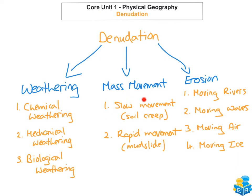For mass movement: we said the slowest form of movement is soil creep — an example of that would be in County Clare. And a rapid form of movement could be a mudslide, with an example being Vargas State in Venezuela in 1999.